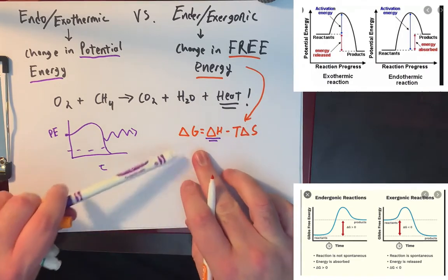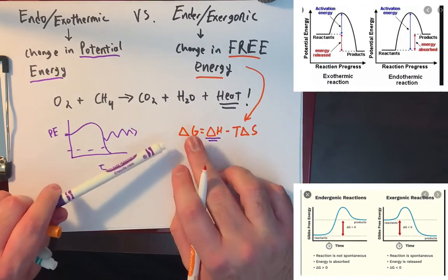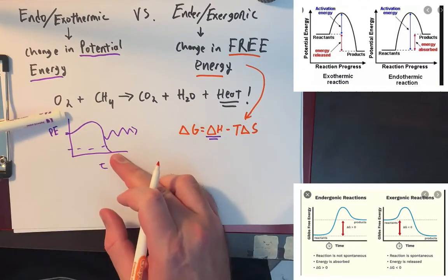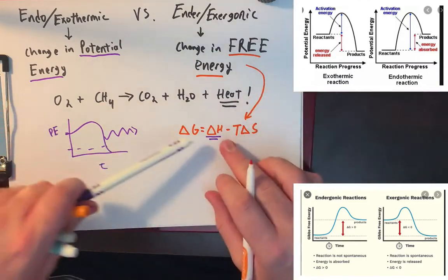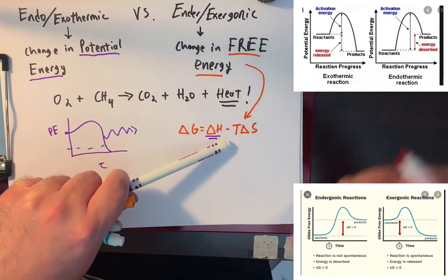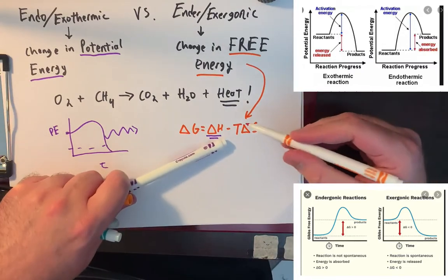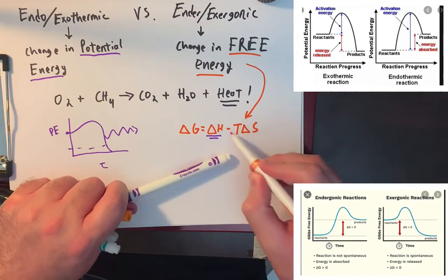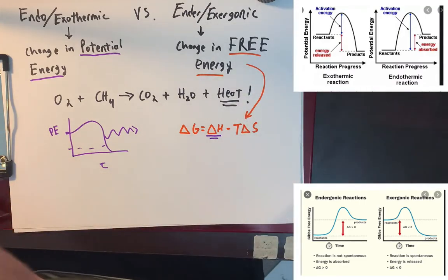So you're basically saying that the energy you can use to get work done is equal to the energy of your reaction, the potential energy, minus however much you're going to lose from the inevitable process of entropy. The temperature here is just to keep things dimensionally consistent.